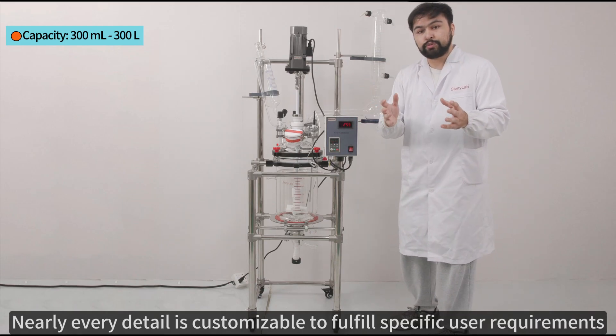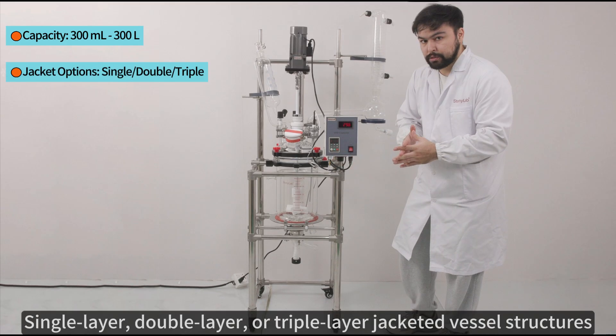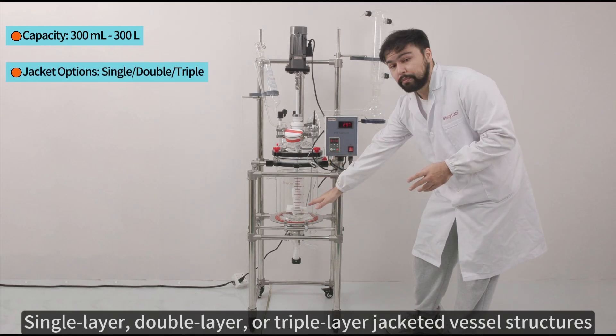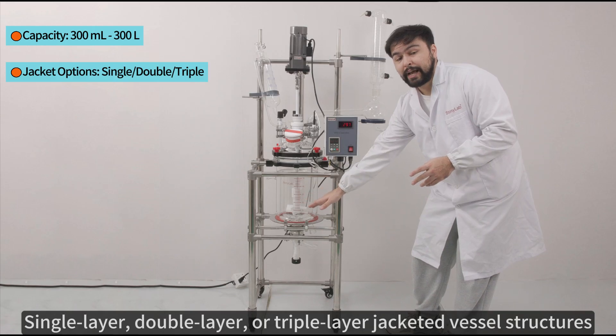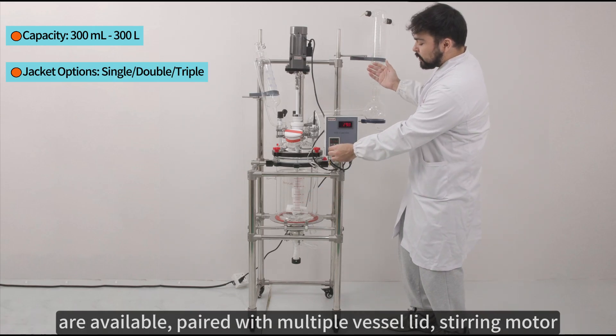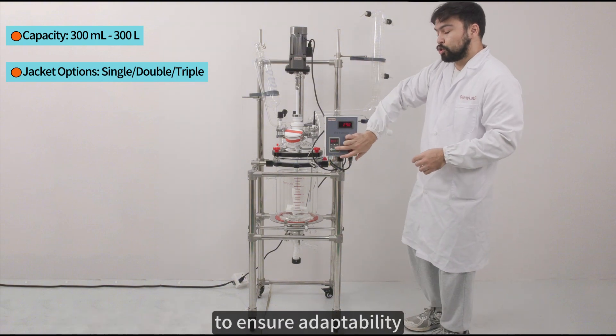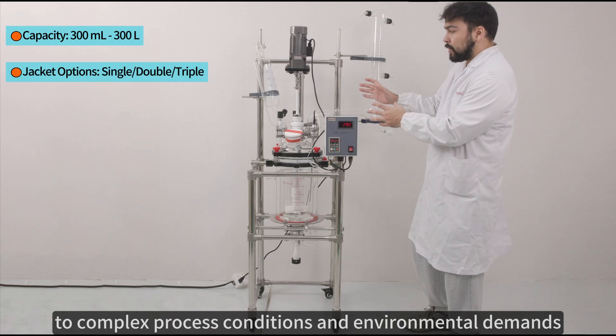Diverse configuration and structure options are available. Single-layer, double-layer, or triple-layer jacket vessel structures are available, paired with multiple vessel lid, stirring motor, and frame material options to ensure adaptability to complex process conditions and environmental demands.